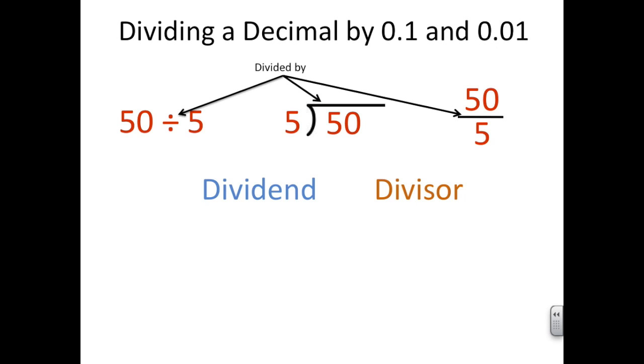Let's first identify the dividend, which is the number being divided. 50 is our dividend. When writing division as a fraction, the dividend is the numerator.